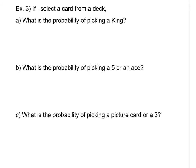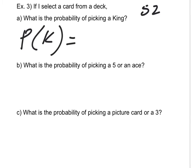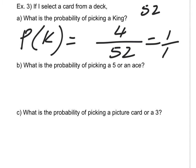We're going to need to familiarize ourselves with cards. Each deck has 52 cards. What is the probability of picking a king, P(K)? If I pick a card from a deck, there are 52 possible outcomes. How many of those are good for us? There are four kings in the deck, so it's four over 52, which reduces to one over 13 — a one in 13 chance of picking a king.